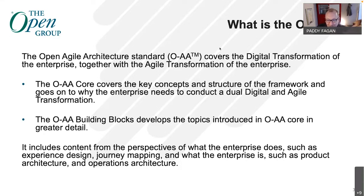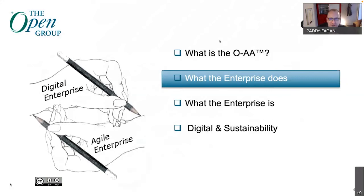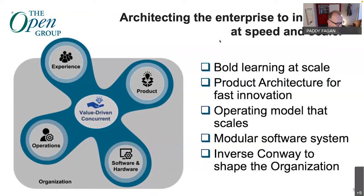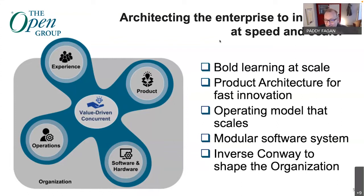What the organization does is about architecting the enterprise to innovate at speed and scale. If you're in the throes of a digital transformation, you need to get to innovation at speed and scale. A lot of this interlocks with what was discussed earlier about how the Open Group is changing how standards are developed and delivered. It's about learning at scale, architecting products for faster innovation, and an operating model that scales — particularly important when talking about internet-delivered or SaaS applications.